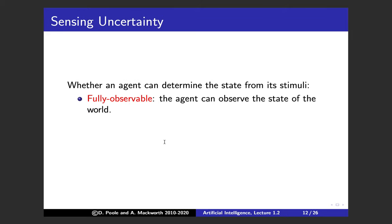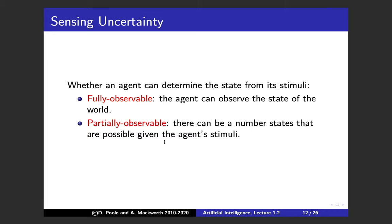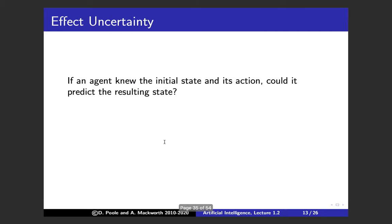One uncertainty dimension is sensing uncertainty — whether the agent is fully or partially observable. An agent is fully observable if observing its environment tells it what state the world is in; it's partially observable if multiple states are consistent with what it perceives. Many toy examples are fully observable, like certain games or truck-scheduling problems. But nearly every real case is partially observable: a robot can't see everything outside its field of view, and a teacher doesn't know the internal state of every student.